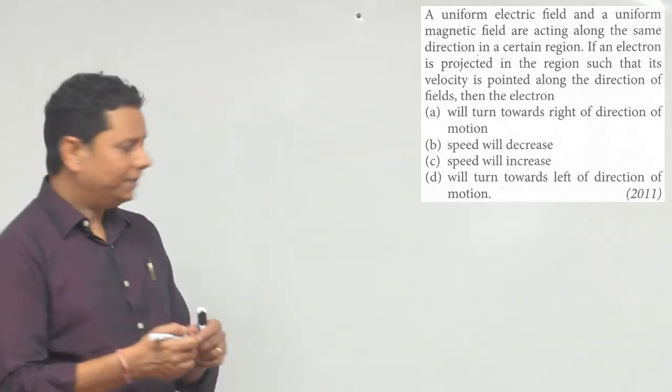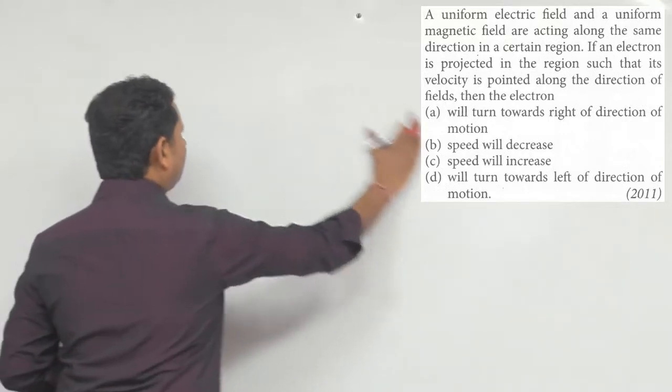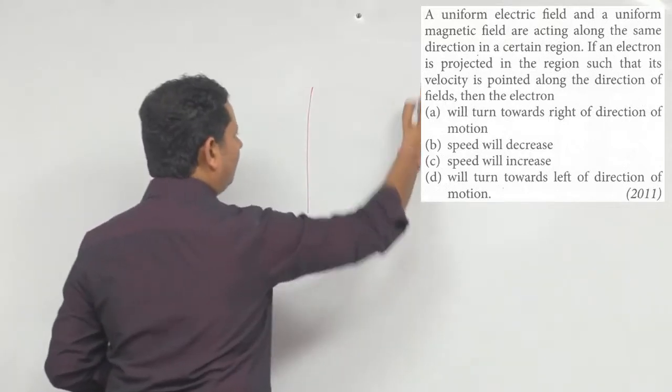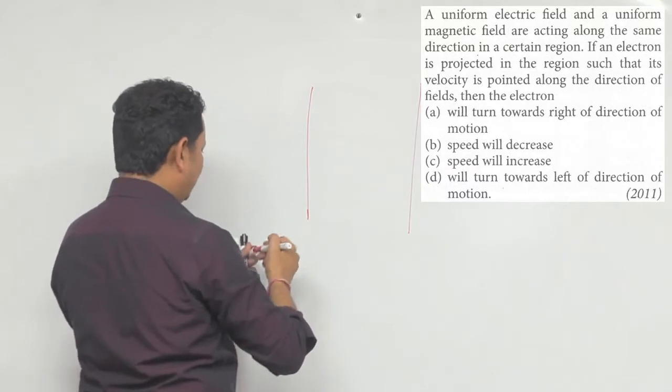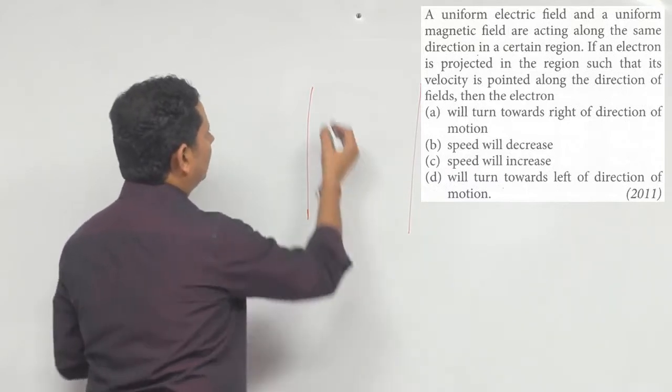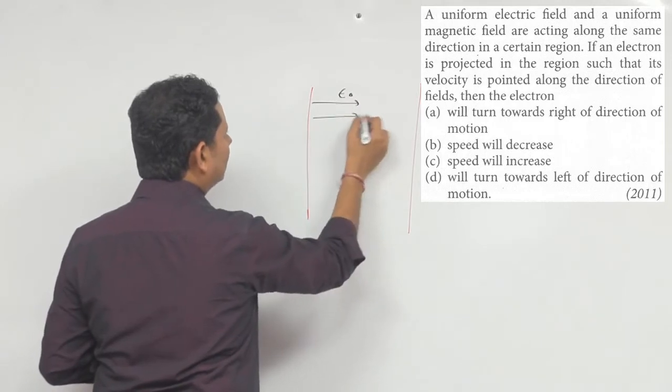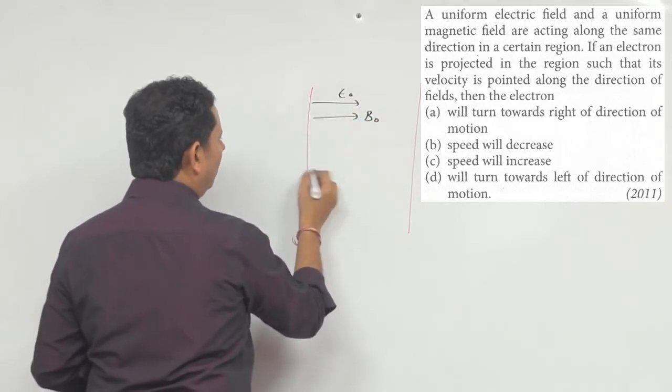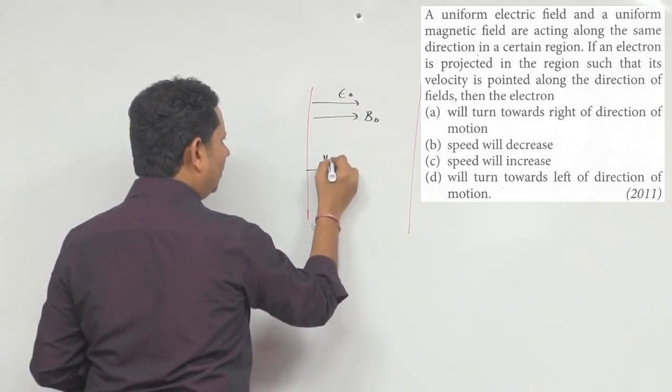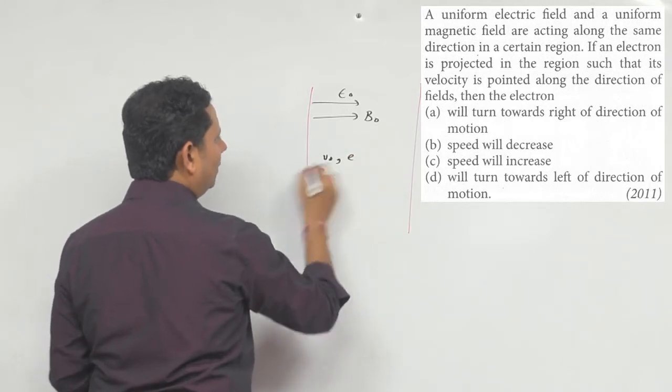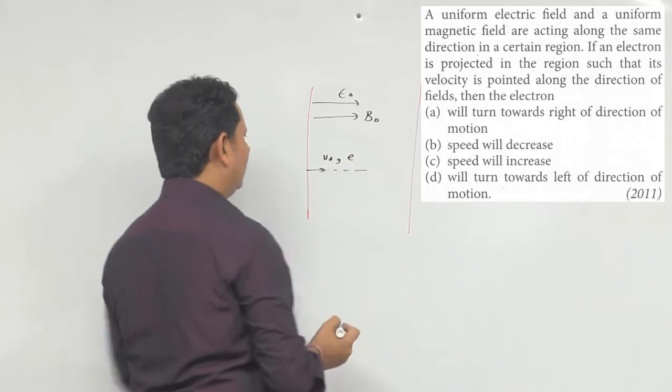So, this is your region. Let us say this is electric field direction. This direction is electric field E0 and this direction is magnetic field B0 and this direction is V0 velocity. So, this direction is electric field and this direction has launched.